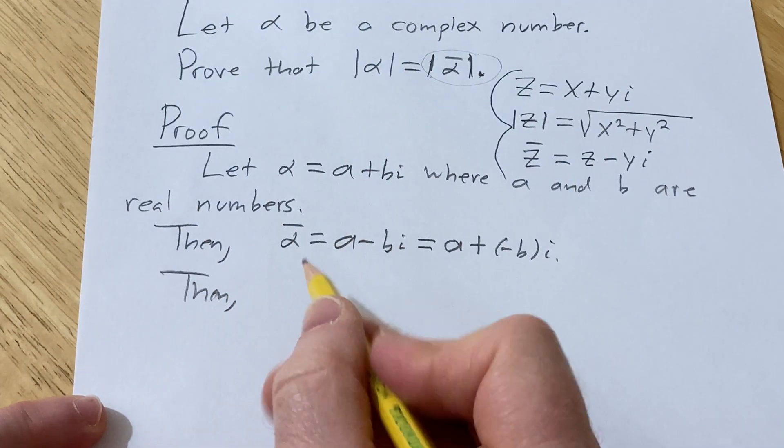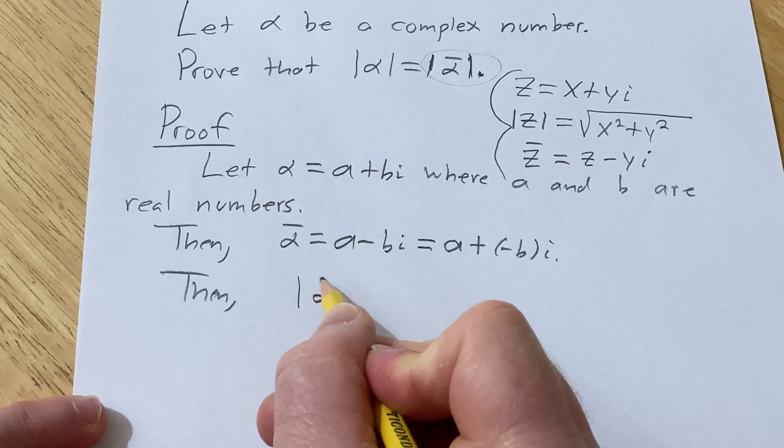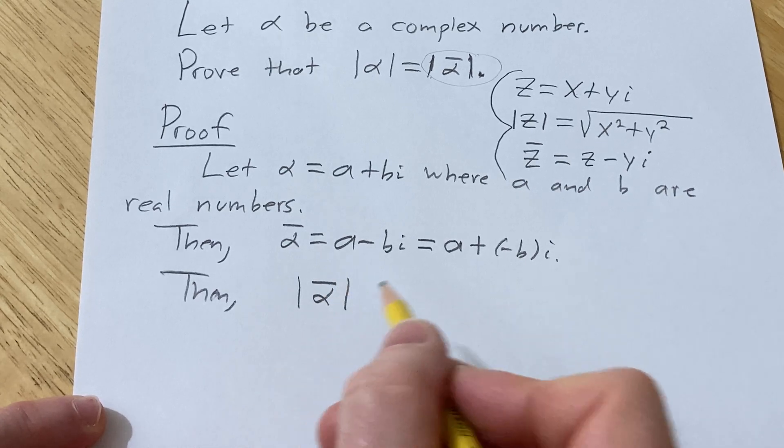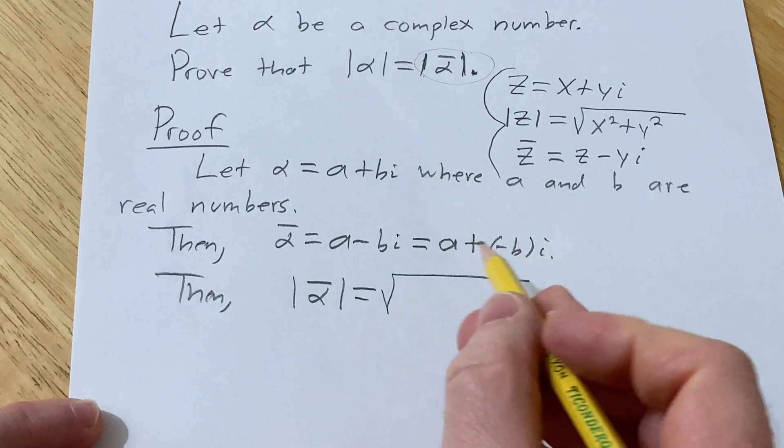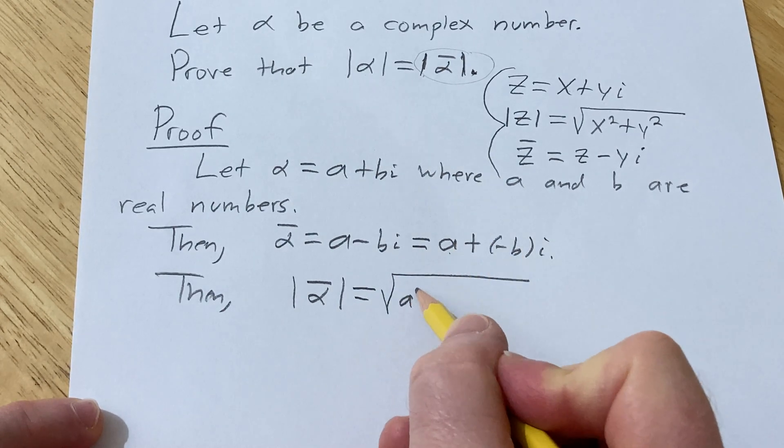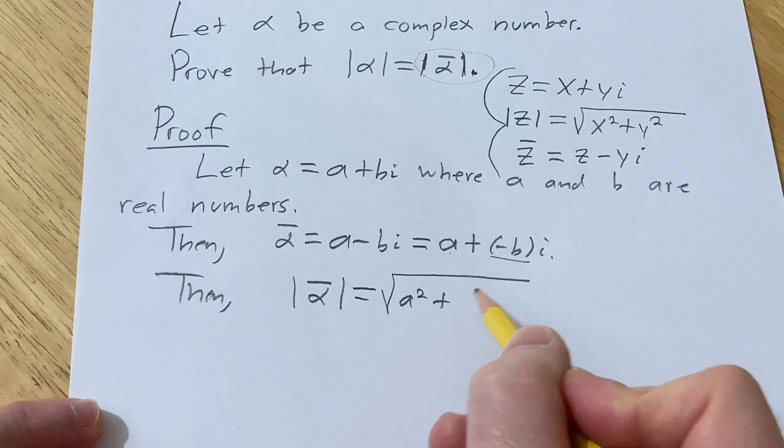If we look at the absolute value of the conjugate of alpha, also called the modulus, this equals the square root of the real part squared plus the imaginary part squared.